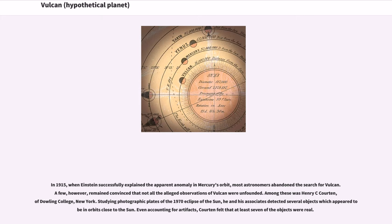Studying photographic plates of the 1970 eclipse of the Sun, he and his associates detected several objects which appeared to be in orbits close to the Sun. Even accounting for artifacts, Courten felt that at least seven of the objects were real.